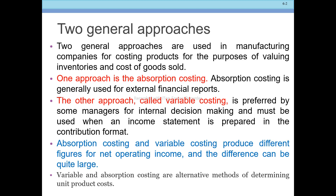Under the variable costing method, the income statement is prepared using the contribution format. In the contribution format: Sales minus all variable costs gives the contribution margin, and then fixed costs are deducted to arrive at net operating income. This is the key structure of the variable costing income statement.